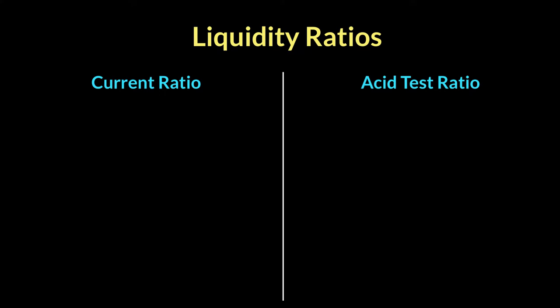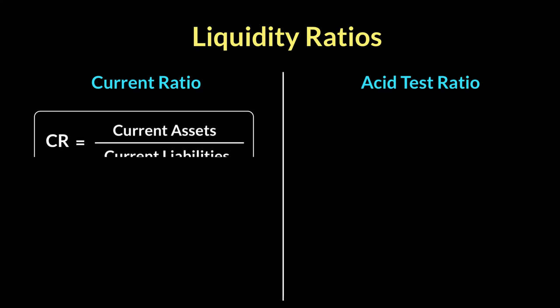A company does that by having a good look at its current ratio and asset test ratio. Let's look at these individually, starting with the current ratio. The formula for the current ratio is simply current assets divided by current liabilities. Both of these pieces of information — current assets as well as current liabilities — appear in the statement of financial position. The current ratio helps us measure the ability of a company to pay its debt.